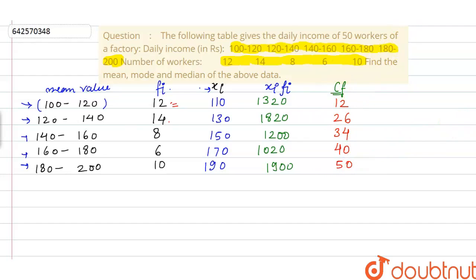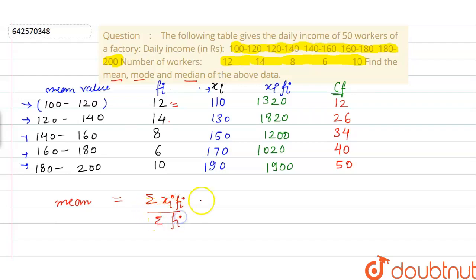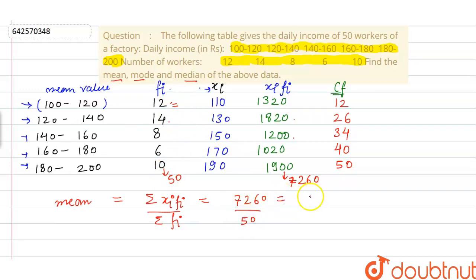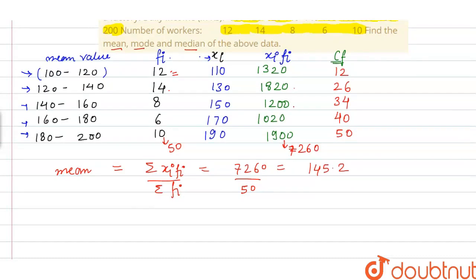Now we have accumulated all the data required. First, we calculate the mean. Mean is given by the summation of xi*fi divided by the summation of fi. The sum of xi*fi is 1320 plus 1820 plus 1200 plus 1020 plus 1900, which equals 7260. The summation of fi is 50. Dividing these gives mean = 145.2.